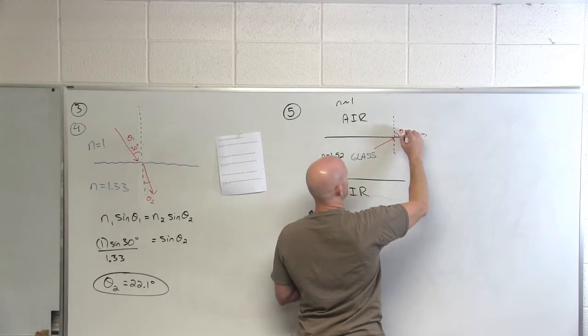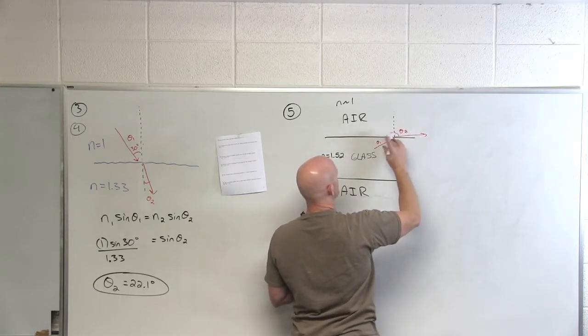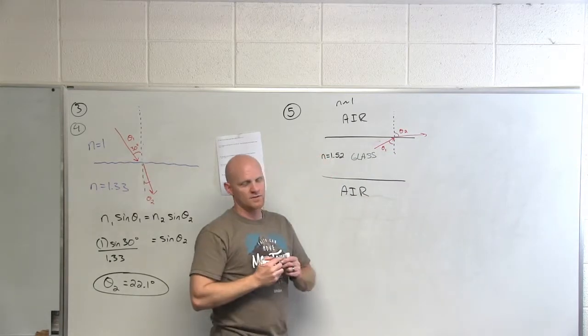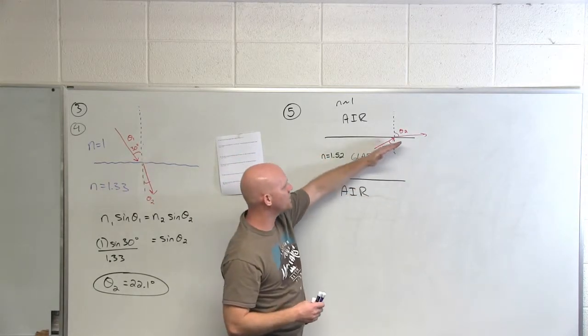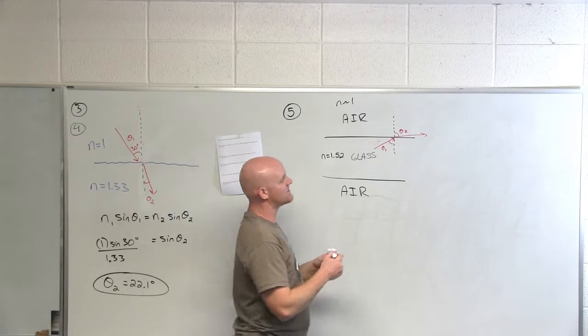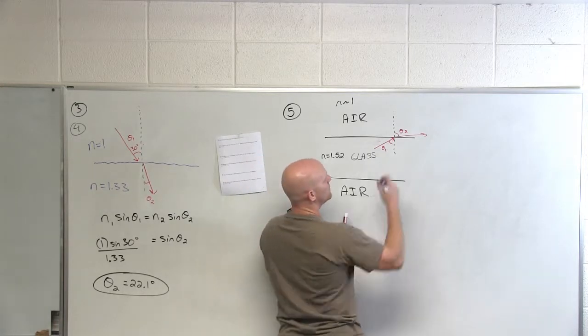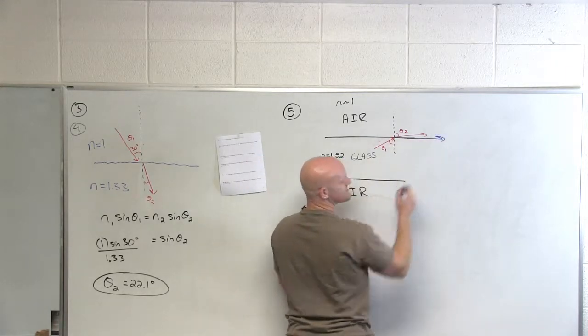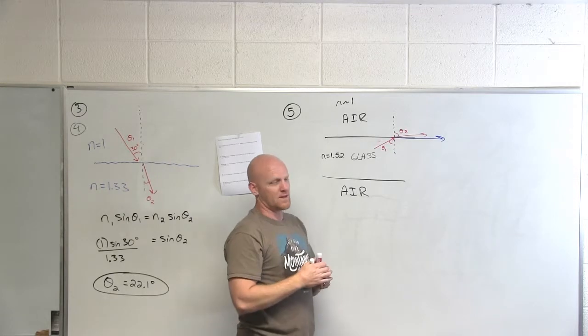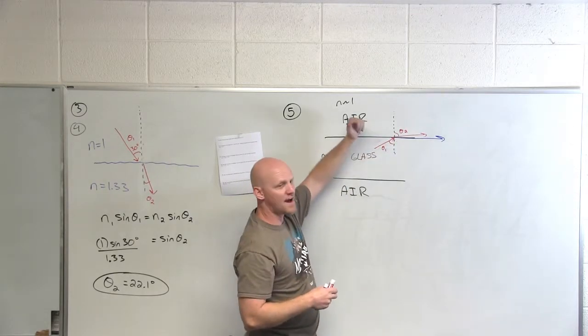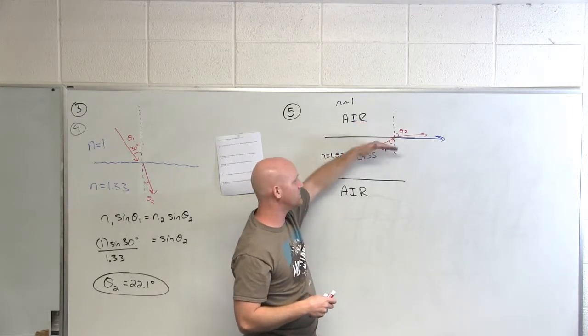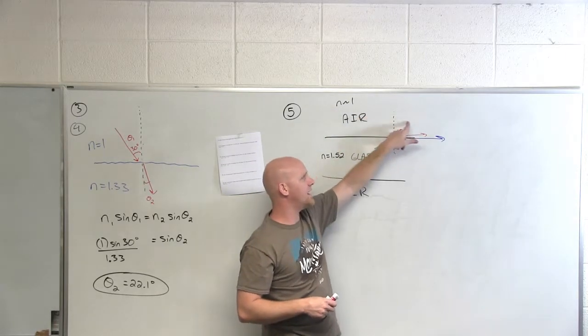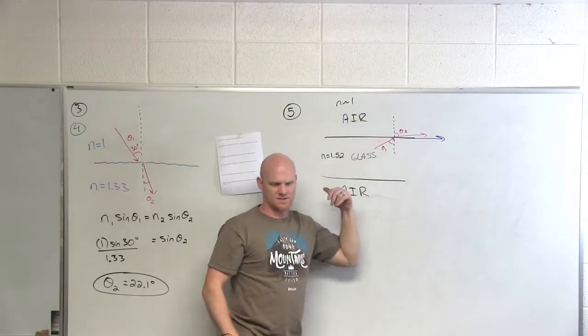Theta 2 here is bigger than theta 1. So in this case, at some point theta 1 will get big enough that your theta 2 would just run parallel to the surface. Any angle that's bigger than that would have no light actually transmitted to the next medium.